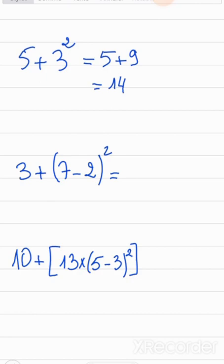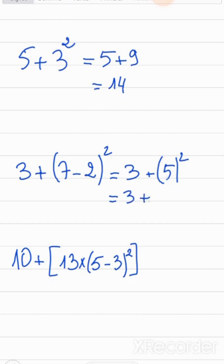Next example, we have addition, subtraction, parentheses, and an exponent. Parentheses are the strongest, so we calculate inside first: 3 plus 7 minus 2, which is 5, then squared. Now the exponent is stronger than addition, so we get 3 plus 5 squared, which is 25, giving us 28.